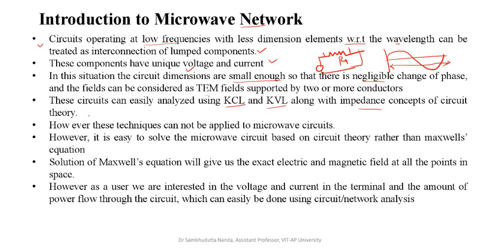There is a problem when we go to microwave circuits or high frequency circuits. In high frequency circuits the wavelength is very small, so a complete wave will pass through a resistor. We cannot say that at one point the voltage is this and at another point the voltage is something else. We cannot use KCL and KVL here because they do not apply, and Ohm's law does not follow either. However, it can be solved using microwave circuit analysis based on Maxwell's equations rather than simple circuit theory. The solution of Maxwell's equations gives us the exact electric and magnetic field at all points in space, which is what we need in microwave engineering.